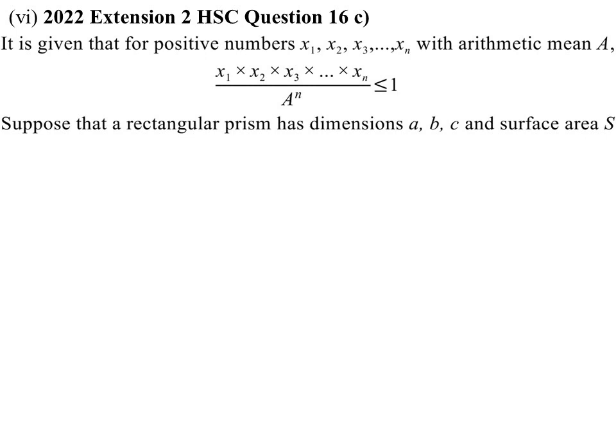One past paper gave what appears to be a confusing statement — it's just the AM-GM inequality written in an unusual form, where the product of all the numbers divided by the arithmetic mean raised to a power is less than or equal to 1. That's just saying the arithmetic mean is greater than the geometric mean, but written in a really confusing way — perhaps because it was the last question in the Extension 2 paper.